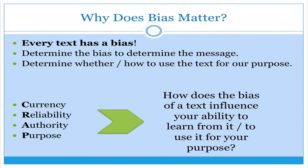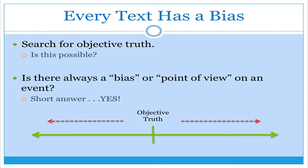We have to understand that all texts are going to have some amount of bias to them. Our job as readers, viewers, and researchers is to figure out what is the bias of our text, and then determine whether we can or can't trust that text in helping us reach our purpose. Every text has a bias — we may be on the search for objective truth, but I'm not really sure if that's even possible, because texts are written by human beings who allow their perspective of the world to seep into the work that they create.